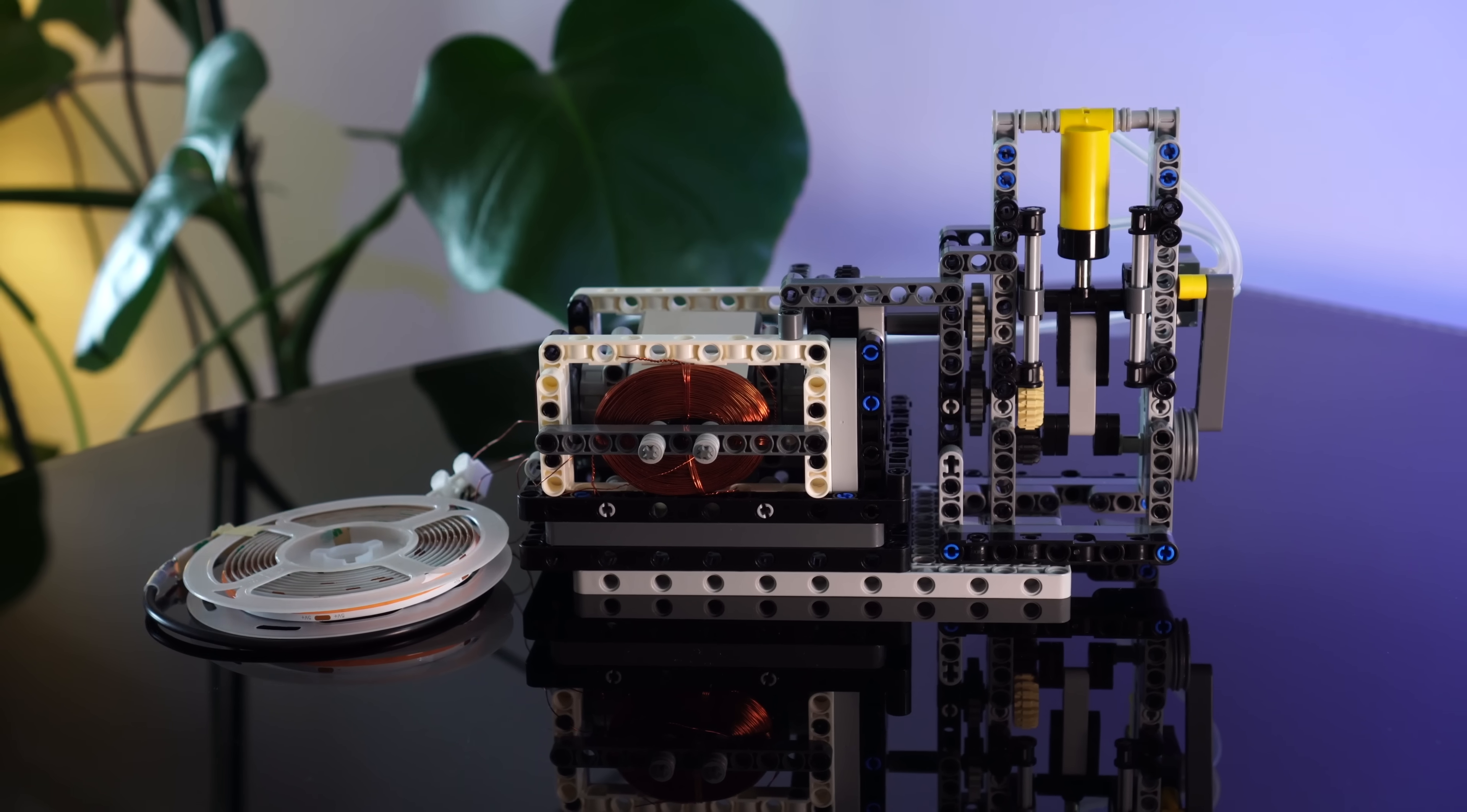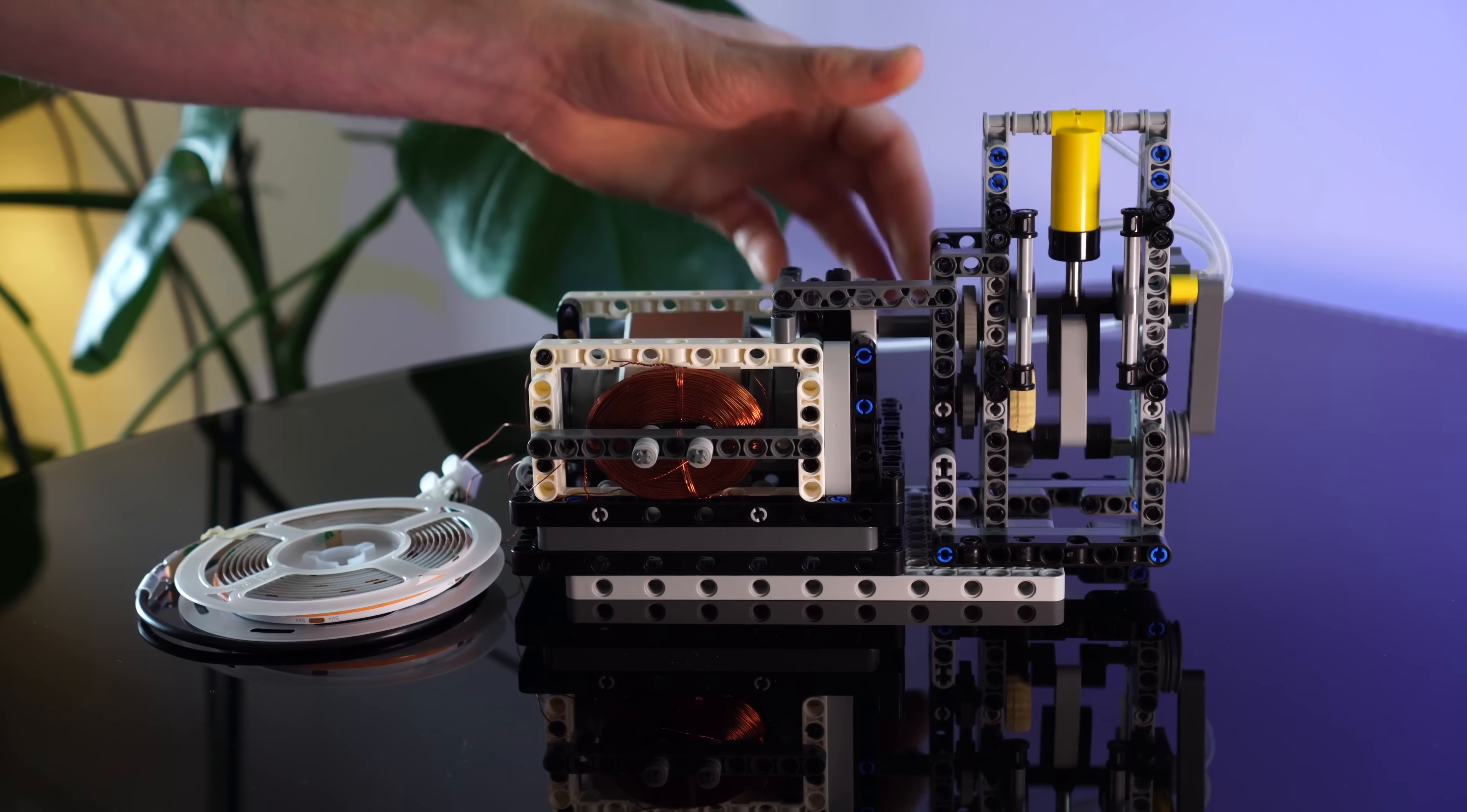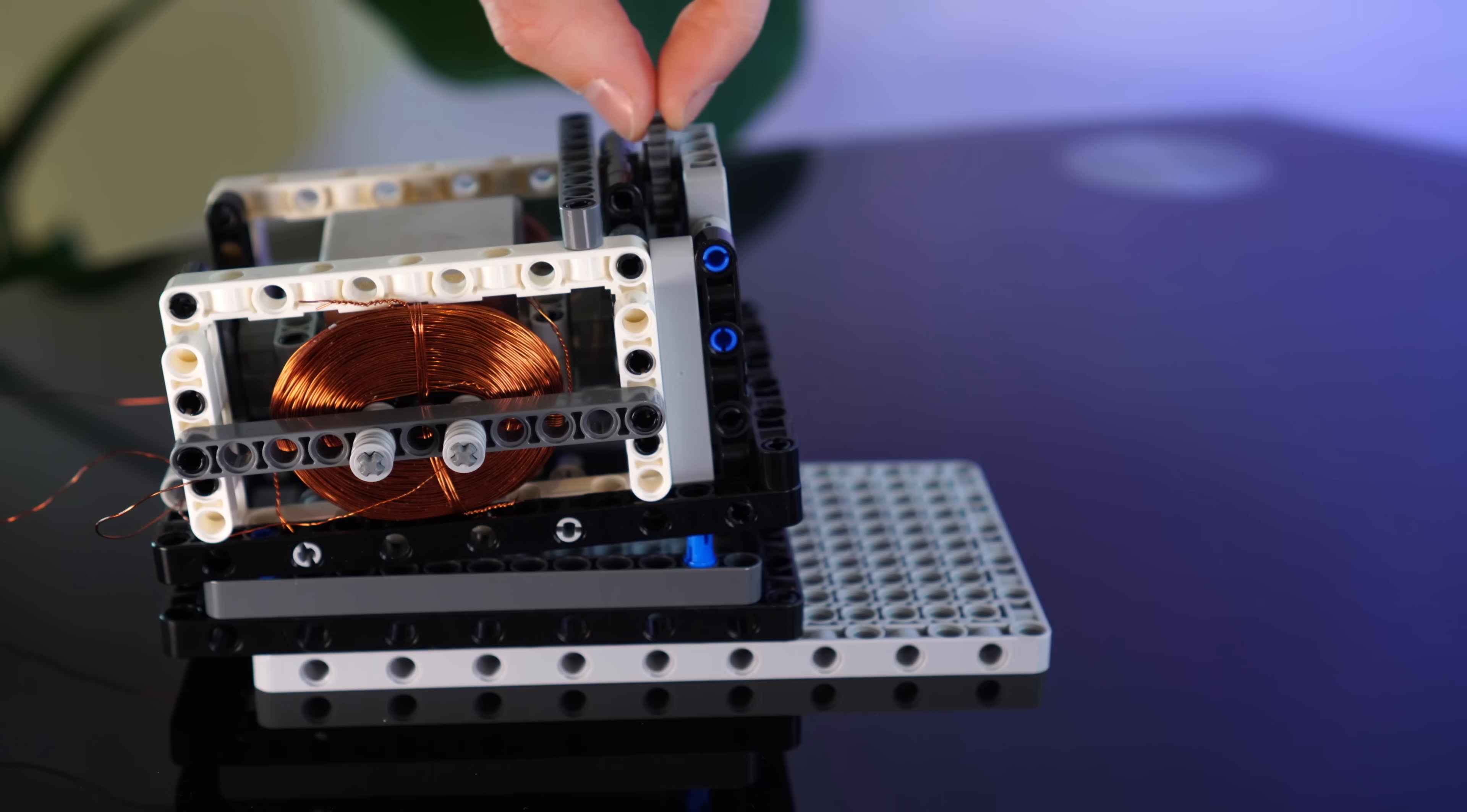And then what if we add the spindle which requires more current? Hmm, well it stalls. Though I admit I did a crappy job modifying the pneumatic switch so it is leaking a bit. What we can do though, is reduce the gear ratio. It'll spin it slower, but it'll have more torque. So let's try this.